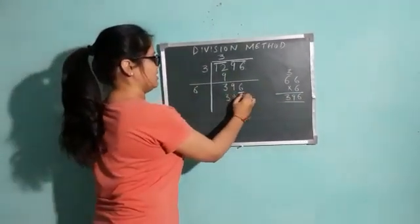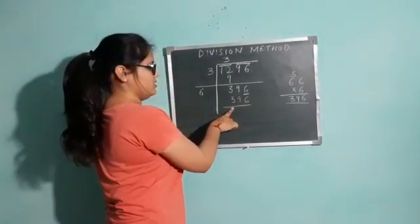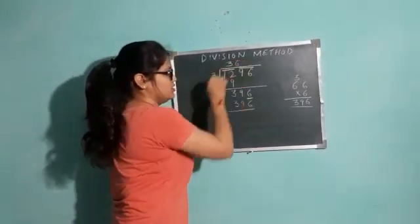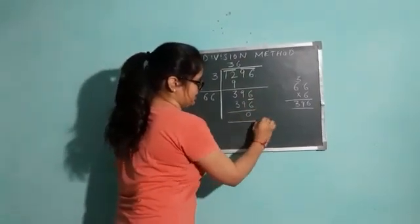So, 396 will be matched. We get 396 when we take 6 here. So, write down 6 here and write down 6 here also. If we subtract, we will get 0.